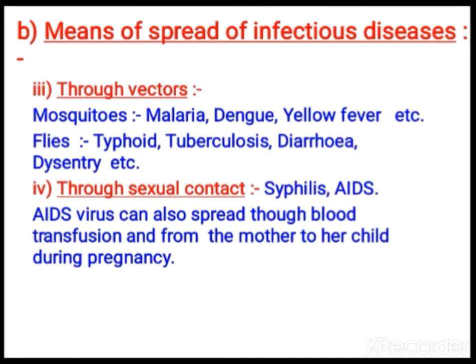Next, through vectors. Vectors are insects or organisms that spread disease from a diseased person to a healthy person. A very common example is malaria — spread by the female Anopheles mosquito, because the female Anopheles mosquito depends on blood as food, while the male Anopheles mosquito feeds on plants. Once it bites an infected person and later bites a healthy person, the disease is carried across. Dengue fever and yellow fever also spread the same way.